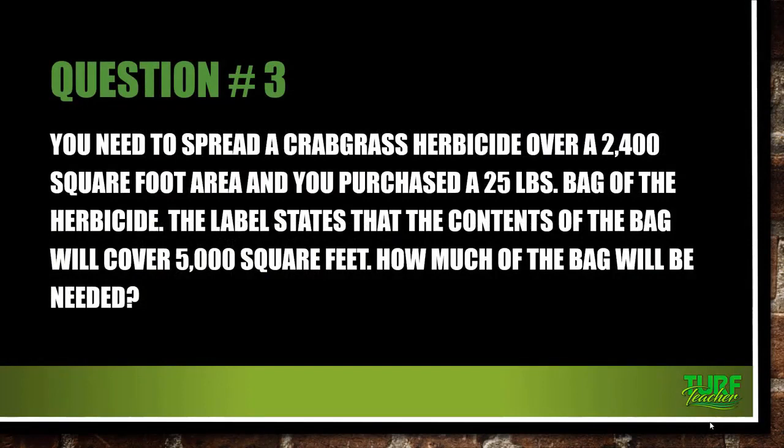Question number three: you need to spread a crabgrass herbicide — pre-emergent — over a 2,400 square foot area. You purchased a 25-pound bag, and the label states the contents will cover 5,000 square feet. How much of the bag will be needed, and how many pounds do you need to use?